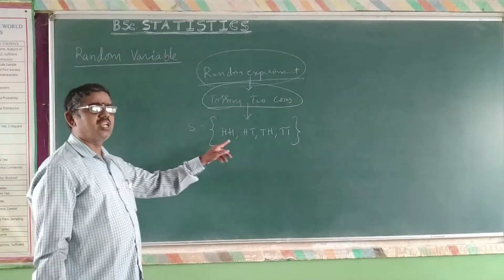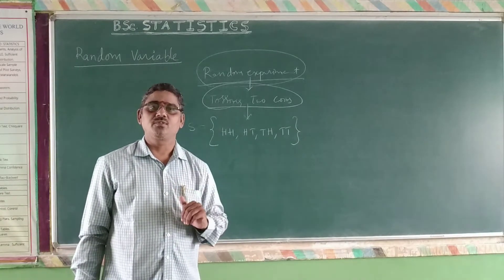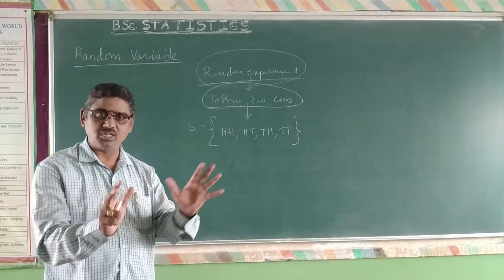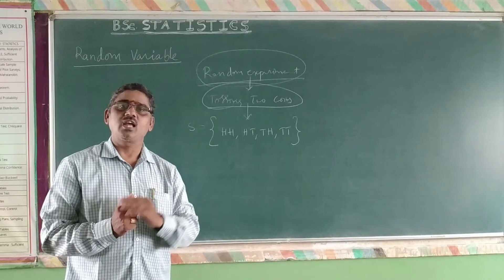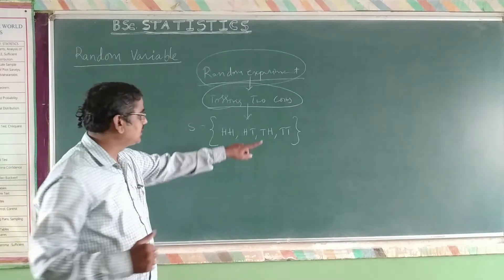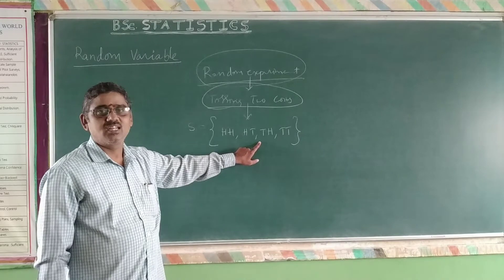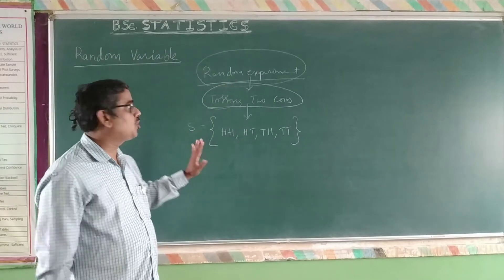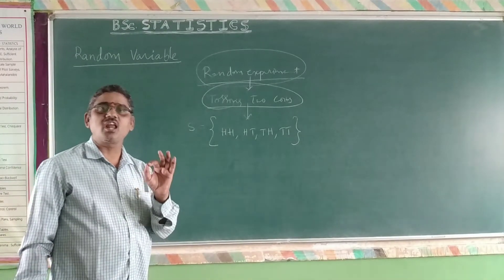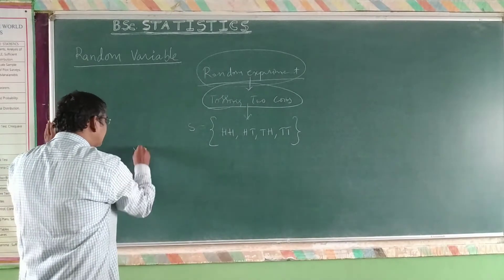This is the sample space in which you have four outcomes. Now we have to define the random variable. A random variable is a real valued function — simply stated, a real valued function defined on each and every outcome of the sample space connected with the random experiment. So, we have to define one such real valued function. For example, I consider X as the random variable.